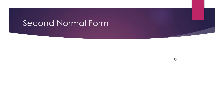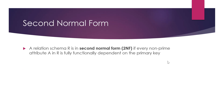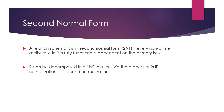A relation is in the second normal form if all non-prime attributes are fully functionally dependent on the primary key. If a non-prime attribute has a partial functional dependency on the primary key — meaning one part of the primary key alone determines that attribute — we need to take that part of the key with the non-prime attribute and create a new relation. This decomposition process brings our relations to the second normal form, where all non-prime attributes are fully functionally dependent on the primary key.